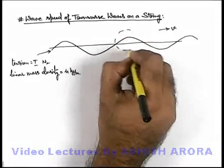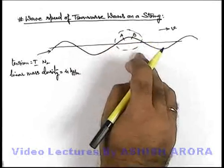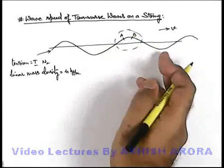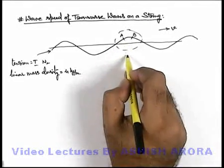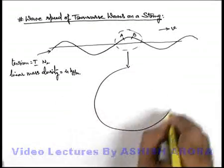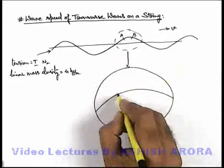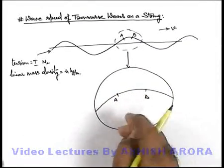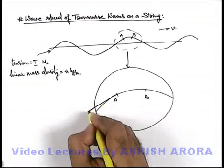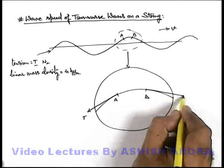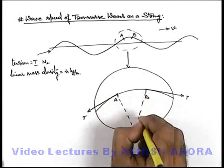We consider a small section on the string — say this section is A-B. Let us consider a section at the top of the string. We know well that when the wave is propagating in the forward direction, this section A-B would be oscillating up and down. We just enlarge this view. In this part of the string, say this is the section A-B. Due to its curved section, the tension would be acting tangentially at the two points on the section A-B.